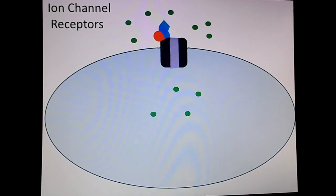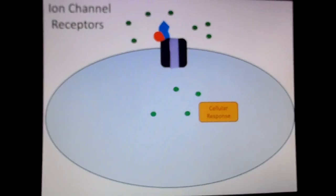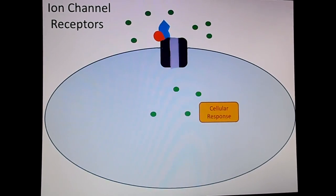Now, when they flow into the cell, that will change the concentration of those ions intracellularly, which can lead to a cellular response. When the ligand dissociates or breaks off from the ligand-gated ion channel, that causes the gate to close. And once again, the ions are blocked from entering.